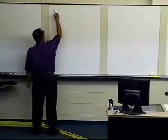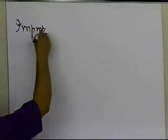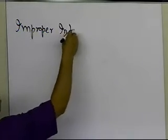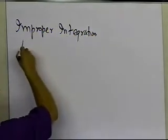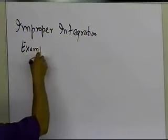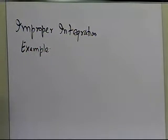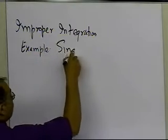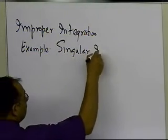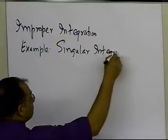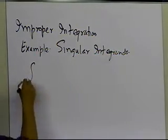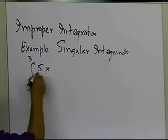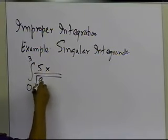In this segment, we're going to talk about an example of improper integration — how do we numerically solve improper integrals. In this example, we are looking at singular integrands, so this example corresponds to integrands which are singular. The example which we want to solve the integral for is given as this.